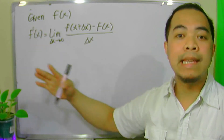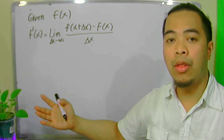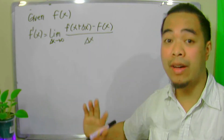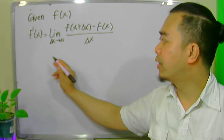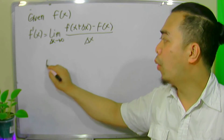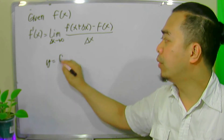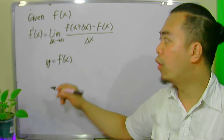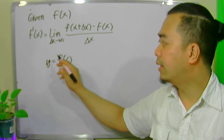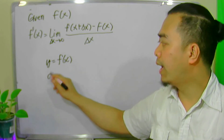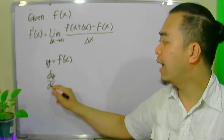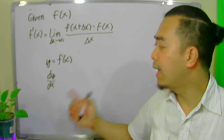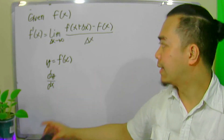f prime here is a notation for the derivative of f of x. There are other notations. So if the function is given as y is equal to f of x, we can write the derivative notation as dy dx, read as the derivative of y with respect to x.